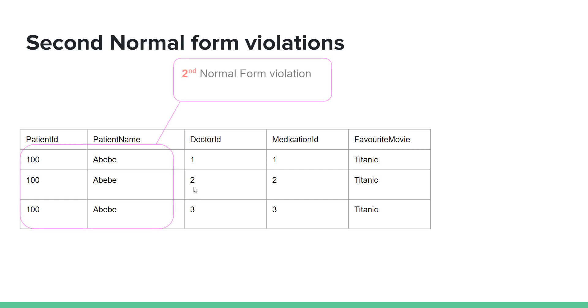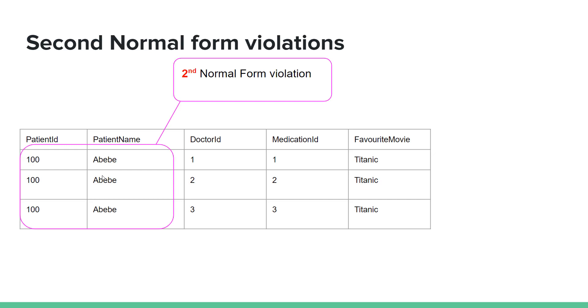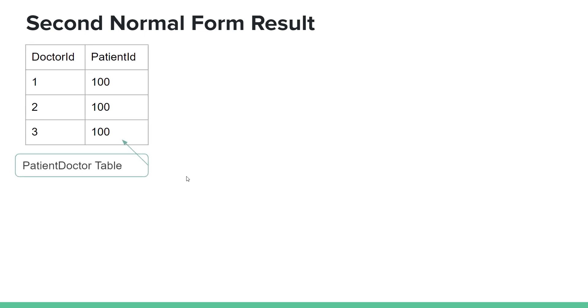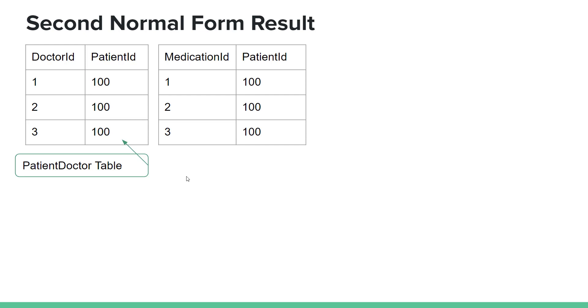This is the patient table. This is a situation where we can have a violation. The patient is associated with the patient's doctor and the patient's medication, creating a real-life table relationship.